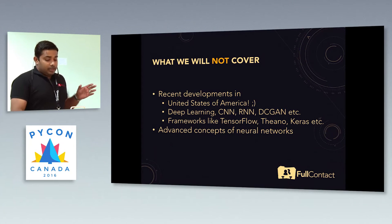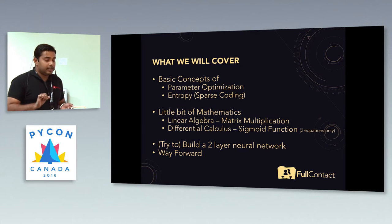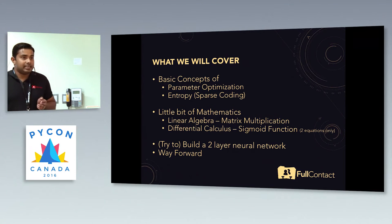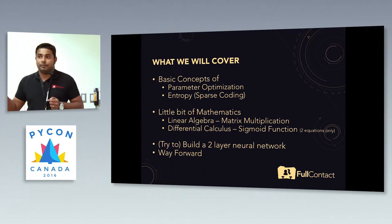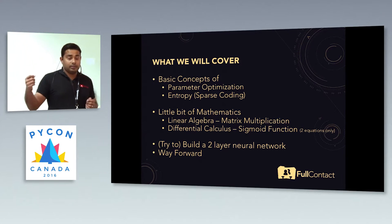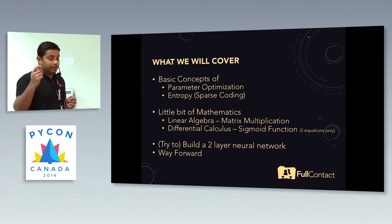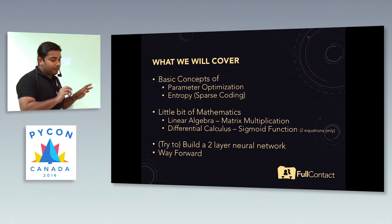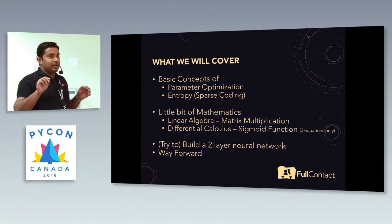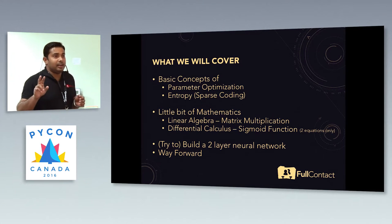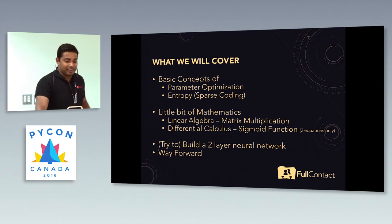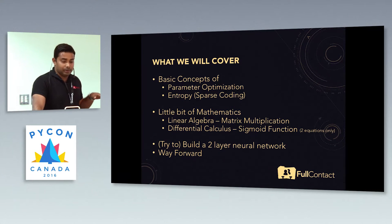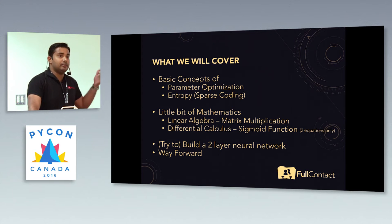What we are going to cover is some very basic concepts you need to understand if you are going to start working with neural networks — like parameter optimization, entropy, and a little bit of maths. I'm promising you there are only two equations in the whole presentation. We'll also try to create a two-layer neural network, and then discuss how you can learn further.